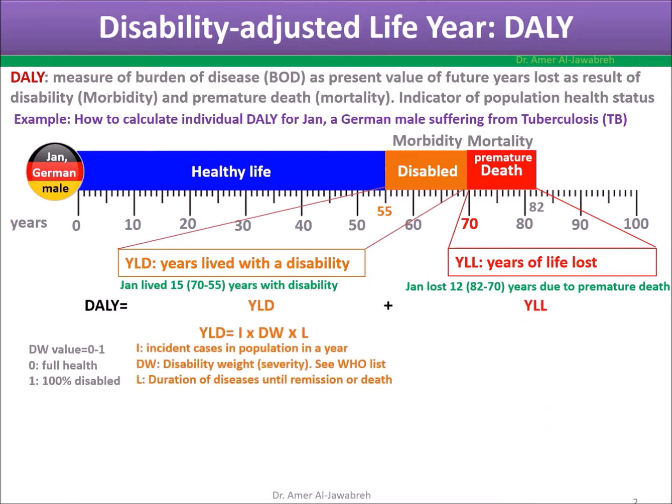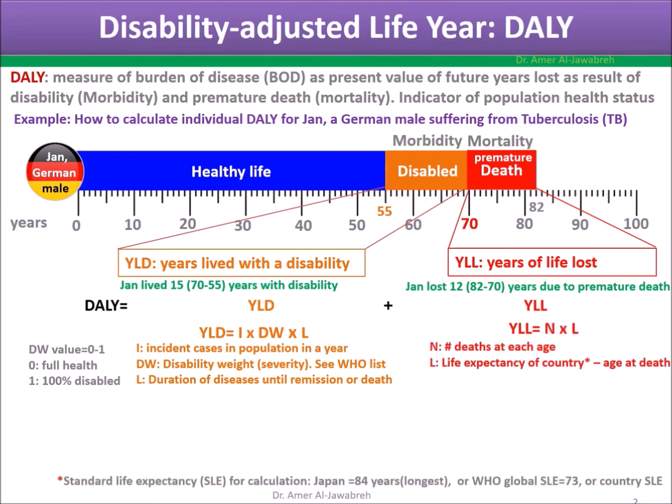YLD = incident cases in the population in a year, times disability weight (severity) — a value between zero, which is full health, and one, which is 100% disabled; the WHO provides a list for this — times duration of disease until remission or death.